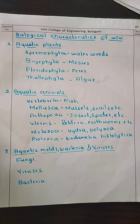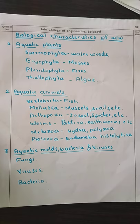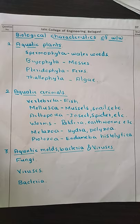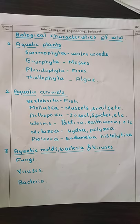We will now discuss aquatic plants, which we divide into four categories: spermophyta, bryophyta, pteridiophyta, and phthalophyta. Spermophyta are called water weeds. Bryophyta have mosses and liverworts. Pteridiophyta have ferns and horsetails. Phthalophyta have algae. Water weeds and algae are of practical importance to wastewater engineers and sanitary engineers.